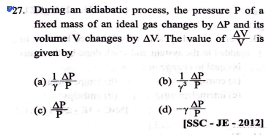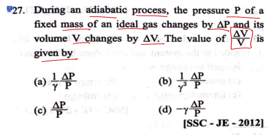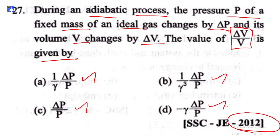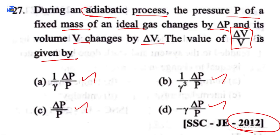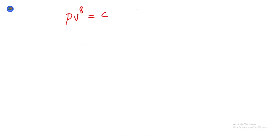During an adiabatic process, the pressure P of a fixed mass of an ideal gas changes by dP and its volume V changes by dV. What is the value of dV/V? The options are: option A 1/γ · dP/P, option B 1/γ³ · dP/P, option C dP/P, option D −γ · dP/P. This is a tricky question from 2012. We take the reversible adiabatic (isentropic) relation: PV^γ = constant.